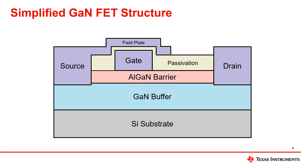The heterojunction of the aluminum gallium nitride barrier and the GaN buffer, which is a type of junction between two different semiconductors, forms something called a two-dimensional electron gas, or 2DEG for short, and it has very high charge density and mobility. It is in this 2DEG channel that current flows, versus in a silicon MOSFET where the channel for current flow is the depletion region between the source and drain.